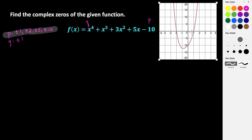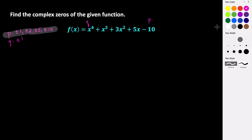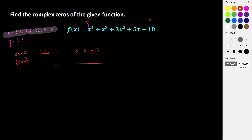We could try one or both of these numbers using synthetic division. I'm going to start by using negative two for synthetic division. So if x equals negative two, that means that x plus two would be a factor. For synthetic division with negative two, bring down all the coefficients: one, one, three, five, negative ten.